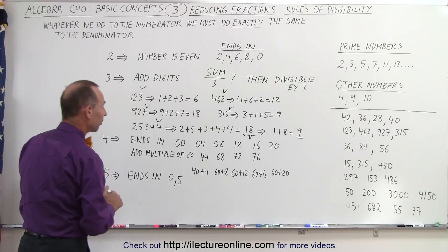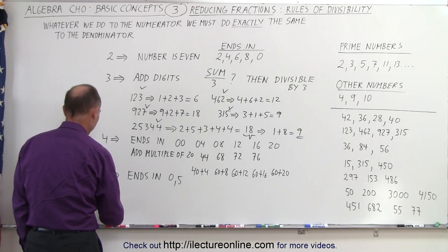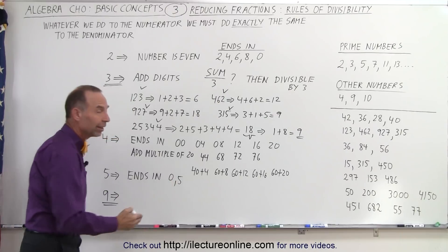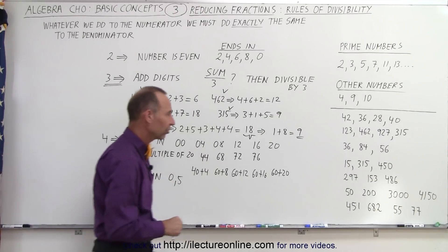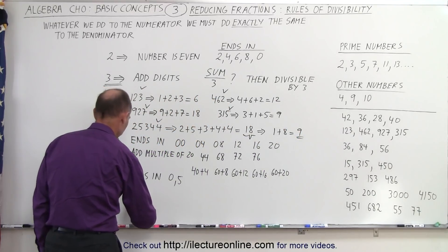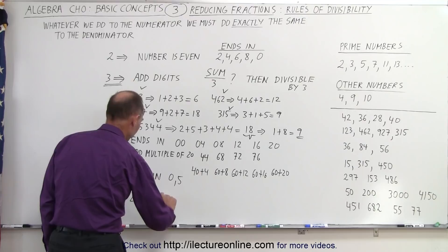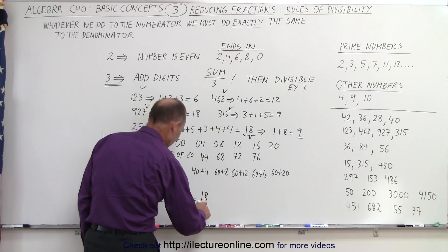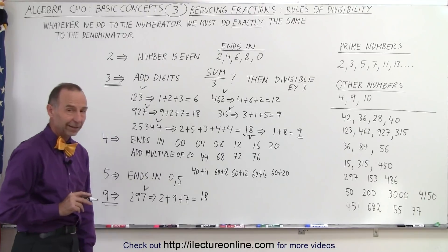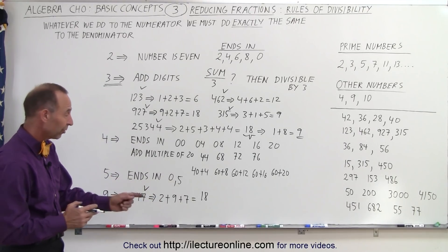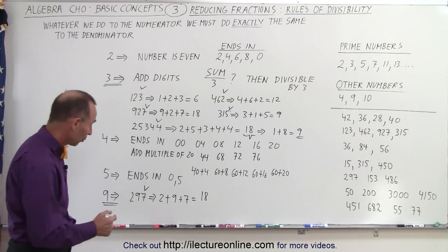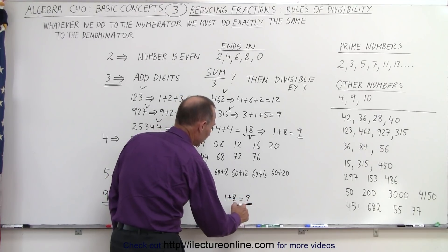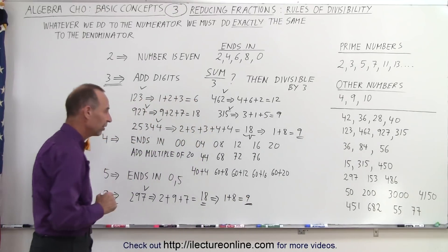The divisibility rule for 9 is similar to the rule for 3. The difference is that whatever digit sum we end with, that number should be divisible by 9. Let's try 297: we add 2 plus 9 plus 7, which equals 18. Since 18 is divisible by 9, the original number is divisible by 9. You can also verify divisibility by 3, since 1 plus 8 equals 9, which is divisible by 3 as well.